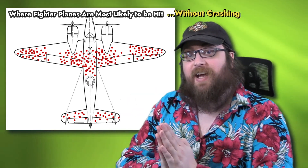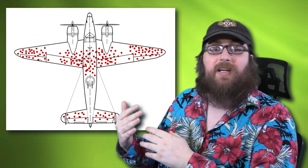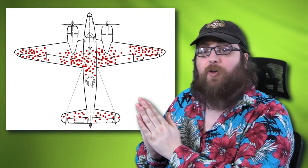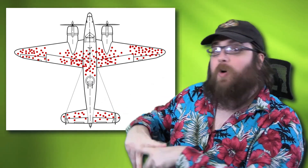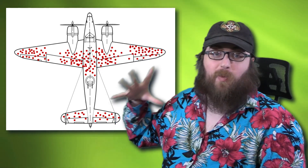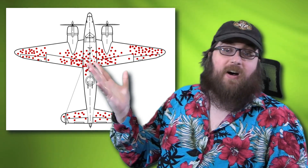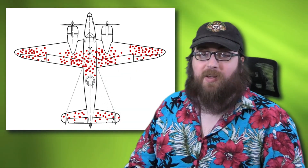So what this pattern really shows is where planes are most likely to be hit without going down — that's the hidden data. What it means is that you don't need to reinforce these areas, because clearly a plane can still survive with holes there. Where you actually need more armor is everywhere else. Those are the places where a single bullet hole was often enough to cause catastrophic failure. This chart and crime statistics both show that how the data on a chart is gathered can sometimes be more important than the data itself, and can dramatically change the way you interpret it.